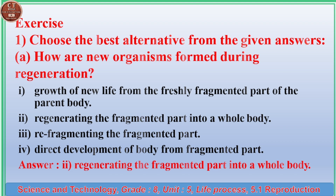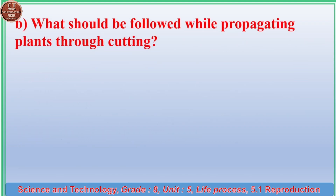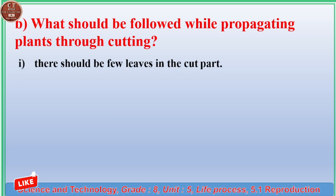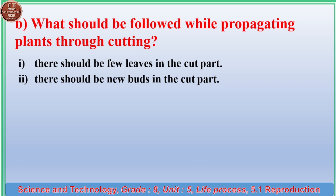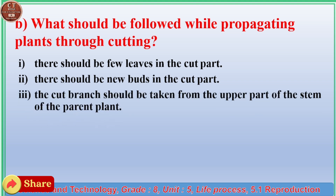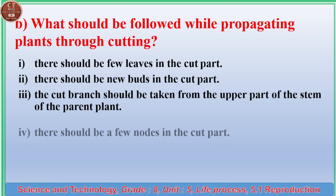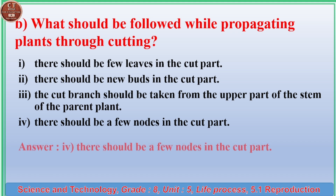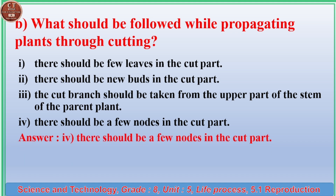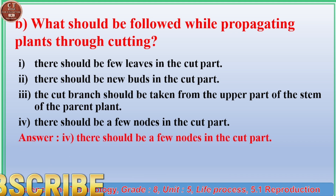(b) What should be followed while propagating plants through cutting? (1) There should be few leaves in the cut part. (2) There should be new buds in the cut part. (3) The cut branch should be taken from the upper part of the stem. (4) There should be a few nodes in the cut part. Answer: (4) There should be a few nodes in the cut part.